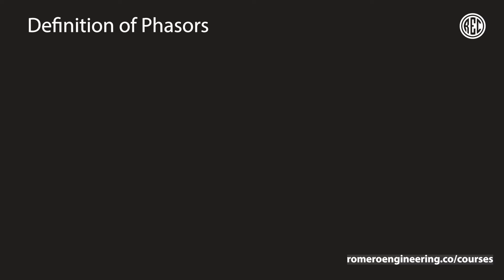Let's say, for example, that we have a voltage waveform given by this equation. So V of t is equal to Vm — the magnitude or amplitude of the voltage waveform — times the cosine of omega t plus some angle theta, and this would be in volts. We can say that this right here is what we're going to call the time domain expression.